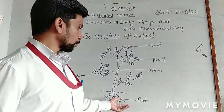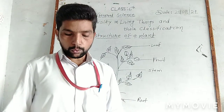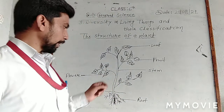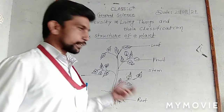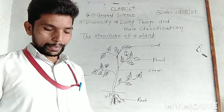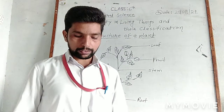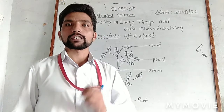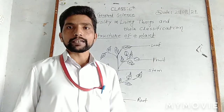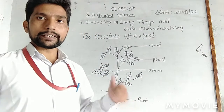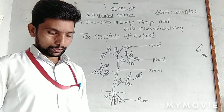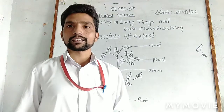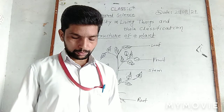The roots hold the soil firmly and anchor the plant. The main function of the root is to absorb and transport water and nutrients from the soil. The roots of the carrot and the radish also store food.